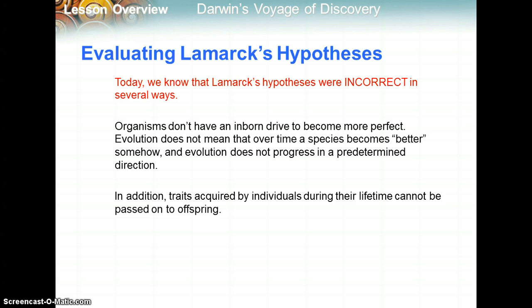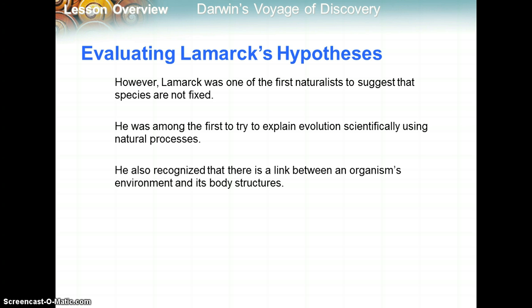However, we know today that Lamarck's hypotheses were incorrect in several ways. Organisms don't have an inborn drive to become more perfect. Evolution does not mean a species becomes better over time, and evolution does not progress in a predetermined direction. Traits acquired by individuals during their lifetime cannot be passed on to offspring — just because a father has large muscles from weight training doesn't mean his children will inherit those muscles. However, Lamarck was one of the first naturalists to suggest that species are not fixed, among the first to try to explain evolution scientifically using natural processes, and he recognized a link between an organism's environment and its body structures.